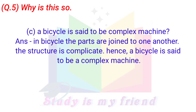C. A bicycle is said to be a complex machine. Answer: In a bicycle, the parts are joined to one another and the structure is complicated. Hence, a bicycle is said to be a complex machine.